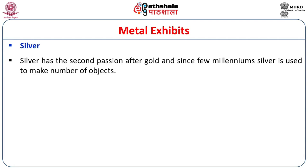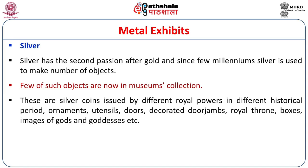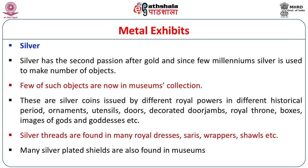Next to gold, silver is another precious metal, and many objects in museums are made of silver. Silver has been used since a few millennia to make a number of objects now in museum collections. These include silver coins issued by different royal powers, ornaments, utensils, doors, decorative door frames, royal thrones, boxes, and images of gods and goddesses. Silver threads are found in many royal dresses, sarees, wrappers, and shawls. Many silver-plated shields are found in museums, and you can see a great number of gold and silver objects in palace museums.